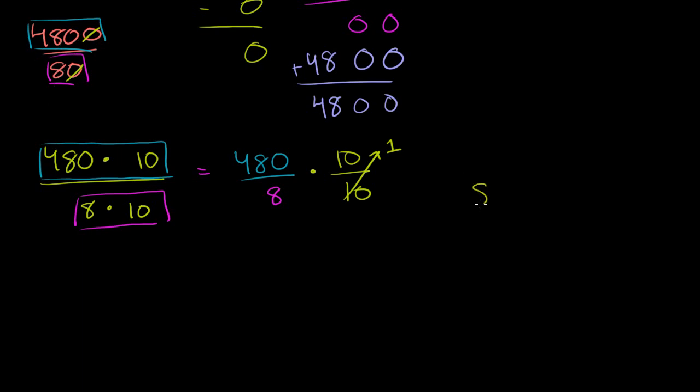And that's an easier problem. 8 goes into 480. And you can say 8 goes into, it doesn't go into 4, so it goes into 48 six times. 6 times 8 is 48. You have no remainder. Bring down this 0. 8 goes into 0 zero times. 0 times 8 is 0. No remainder. And we get 60 again.